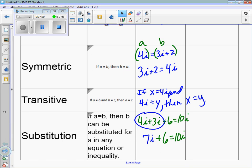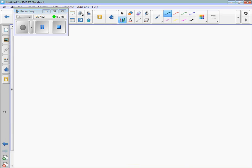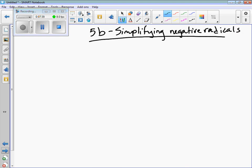Next, for 5b, this is simplifying negative radicals. So the first thing you need to know: what is a negative radical? Like square root of negative 1. In math, square root of negative 1 stands for i. This is an imaginary number.